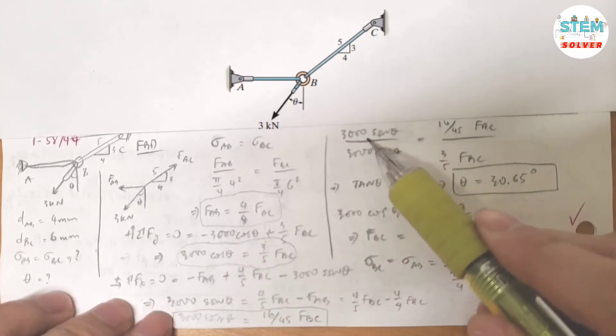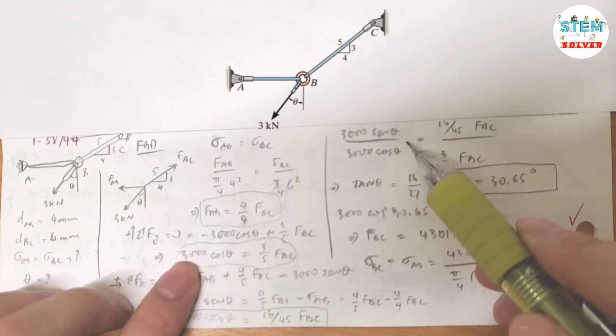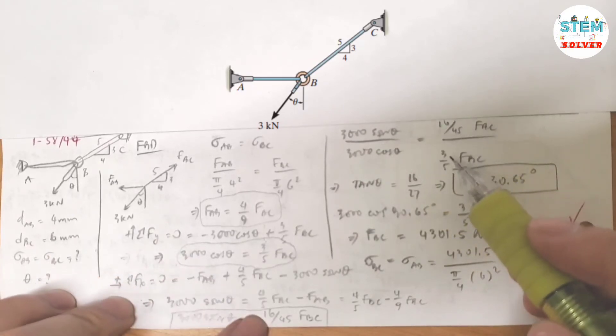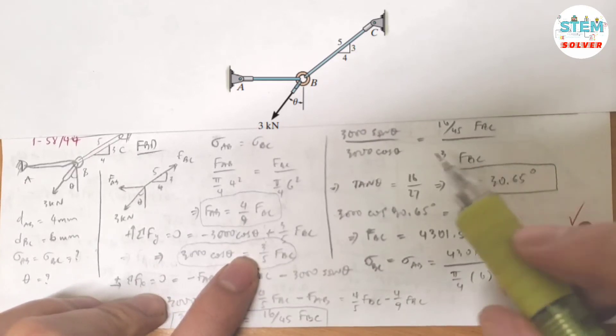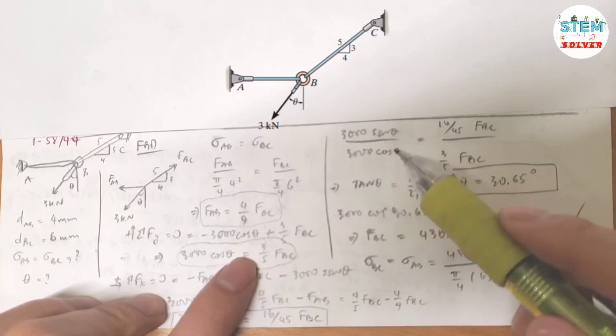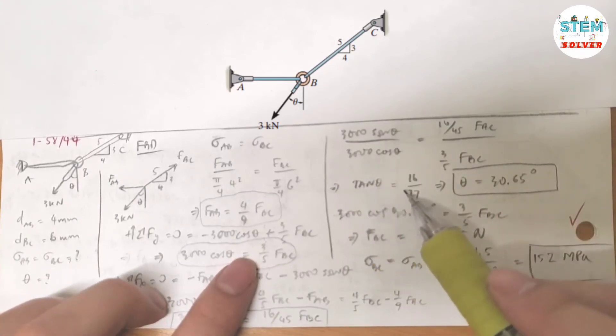So I have 3000 sine theta divided by 3000 cosine theta, which is equivalent to 16/45 FBC divided by 3/5 FBC. FBC top, bottom, cancel out. 3000 cancel out, sine over cosine, tangent. So I have tangent theta equals 16/27.